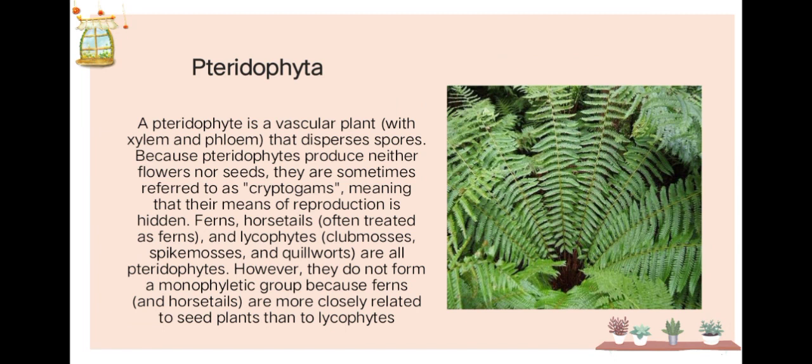Next, Pteridophyta — a vascular plant with xylem for water transport and phloem for food or sugar, that disperses spores because pteridophytes produce neither flowers nor seeds. They are sometimes referred to as cryptogams, meaning their means of reproduction is hidden. Ferns, horsetails, and lycophytes — club mosses, spike mosses, and quillworts — are all pteridophytes. However, they do not form a monophyletic group because ferns and horsetails are more closely related to seed plants than to lycophytes.